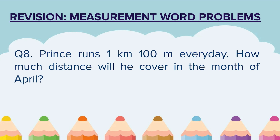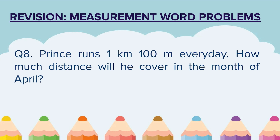Question 8. Prince runs 1 kilometer 100 meters every day. How much distance will he cover in the month of April? Prince is running a particular distance every day. You have to find out the number of days in April and multiply that number by the distance run by Prince in 1 day.